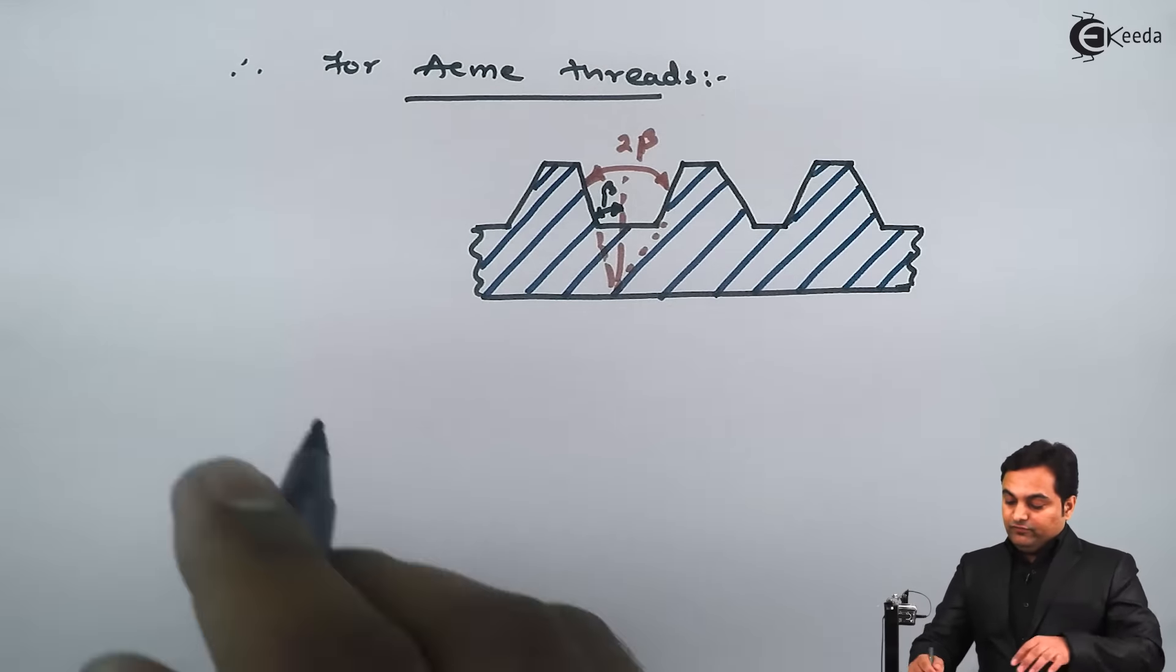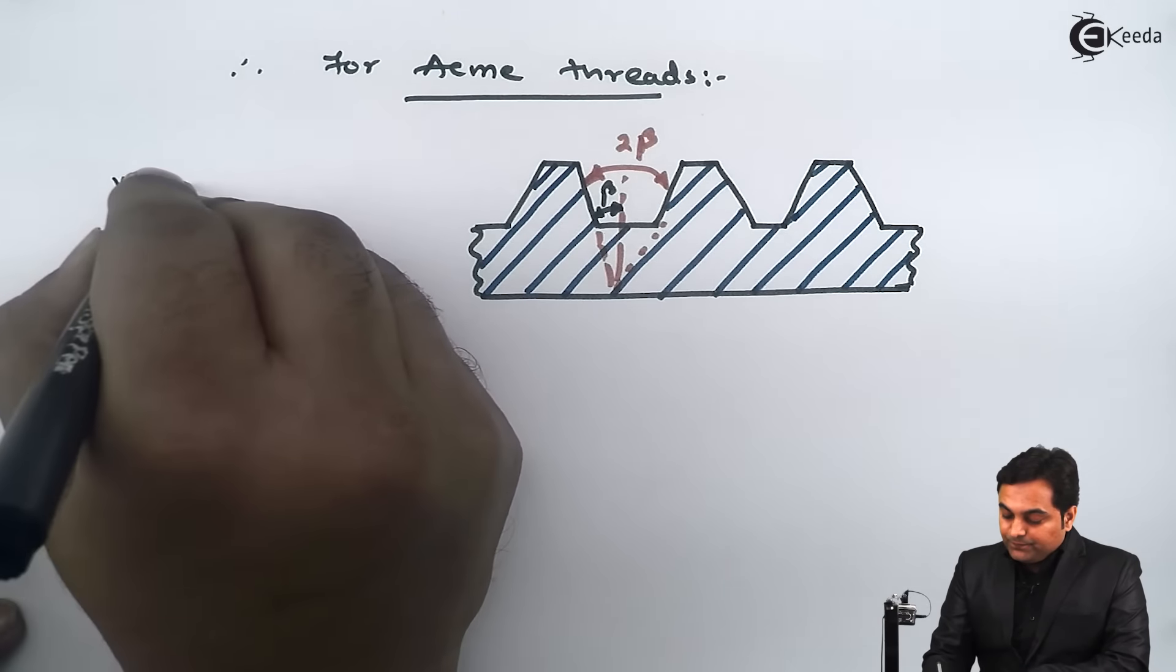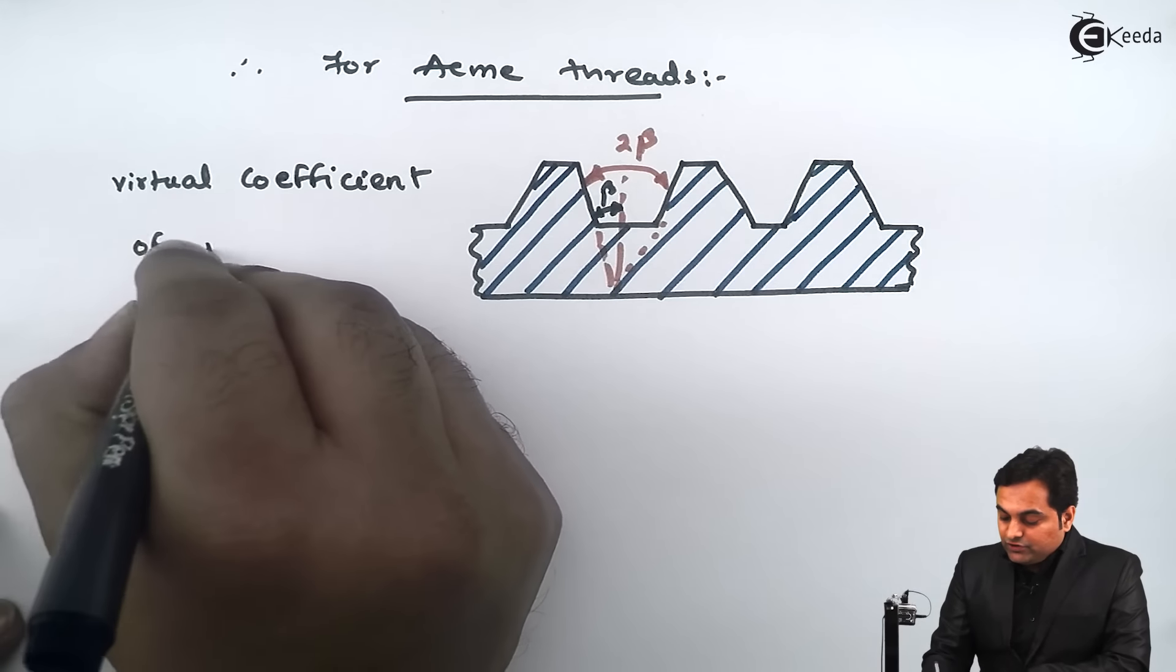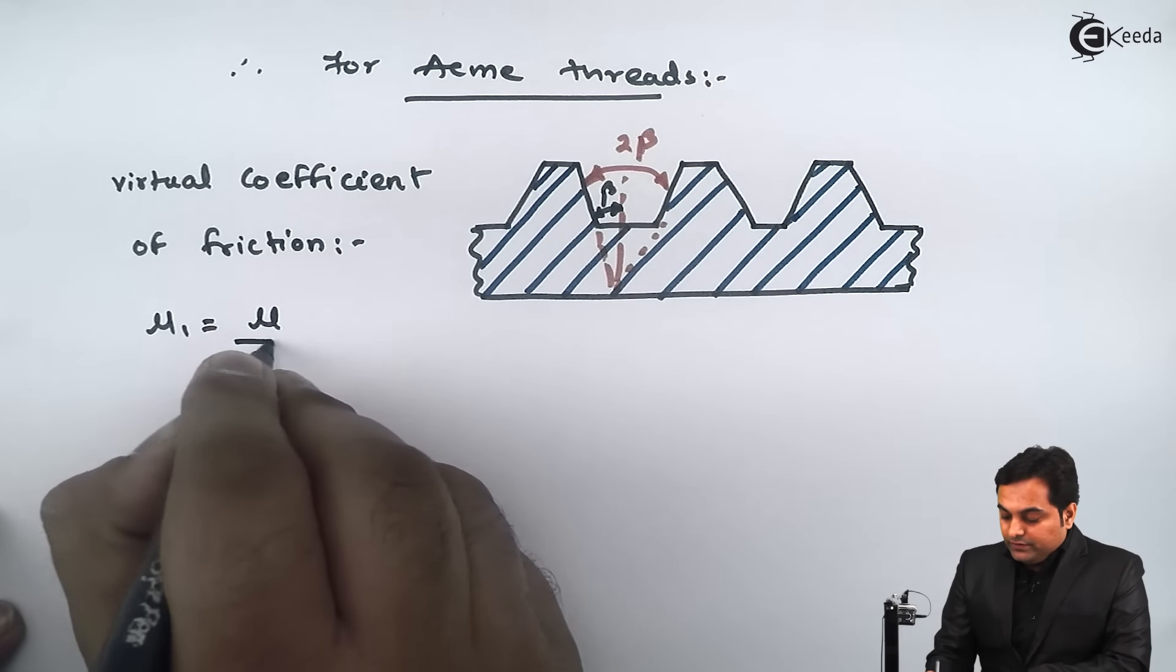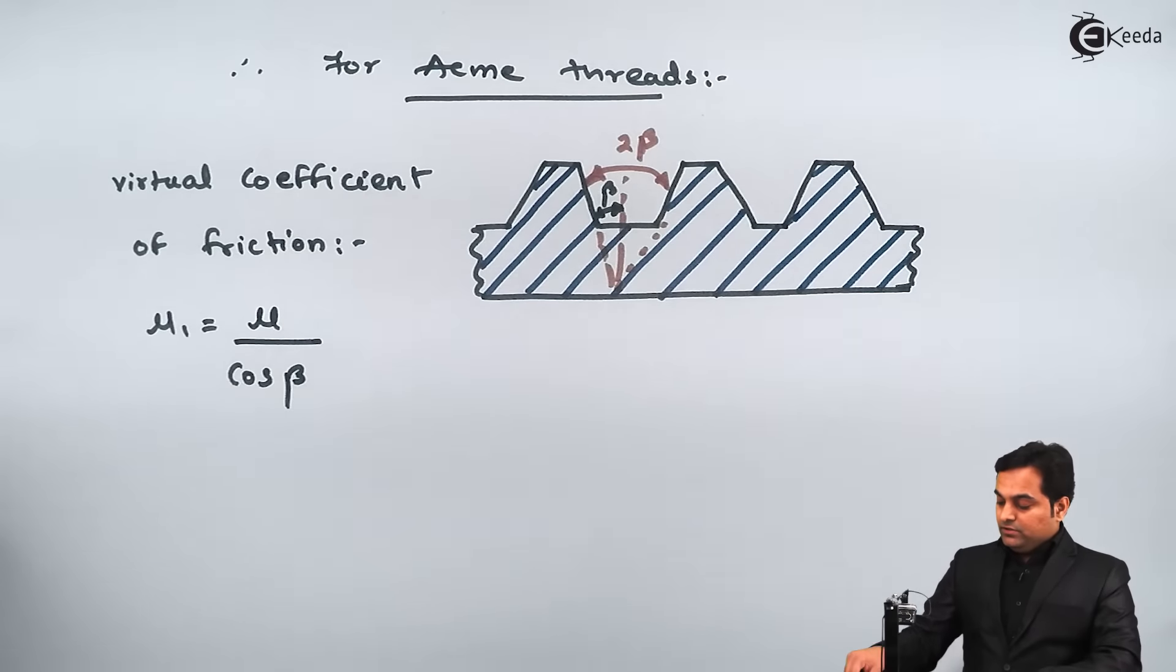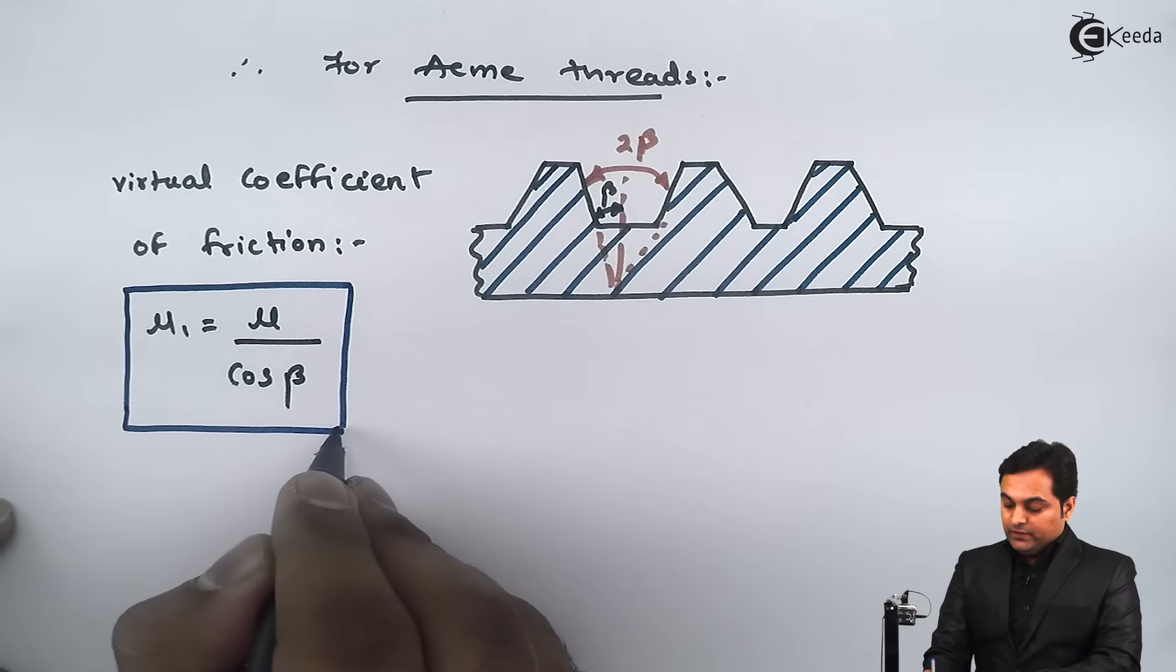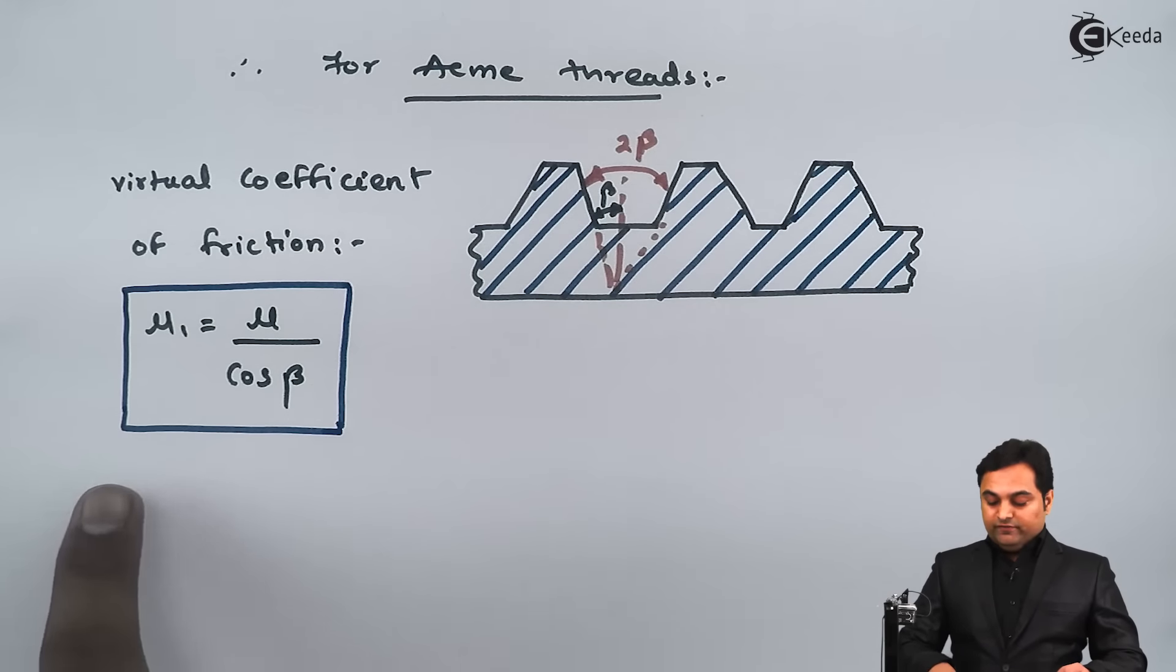So now I will write down for ACME threads, it is called as virtual coefficient of friction. Virtual coefficient of friction, and that is mu1 equals mu, that is the coefficient of friction, divided by cos of beta, that is the semi-friction angle. Everything remains same for ACME threads also. Only thing is we will replace mu with mu1.